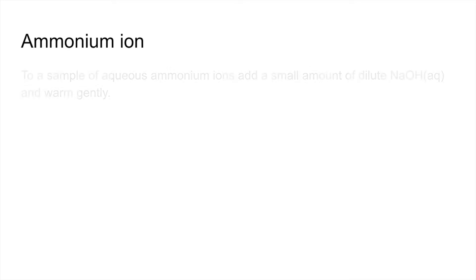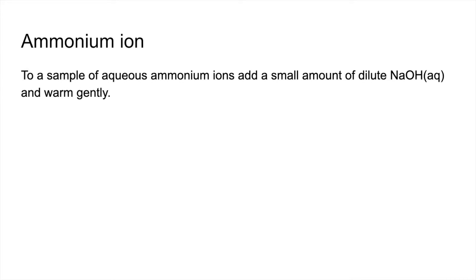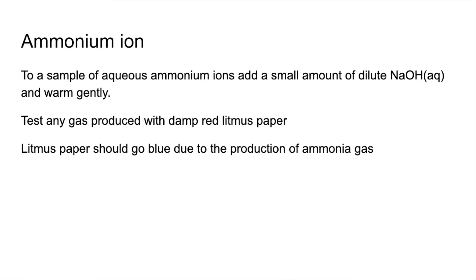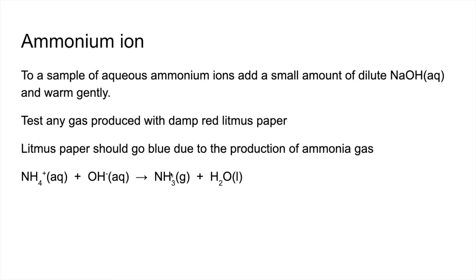Ammonium ions first. To your sample of aqueous ammonium ions, add a small amount of dilute aqueous sodium hydroxide and warm gently. Test any gas produced with damp red litmus paper — the litmus paper should turn blue due to the production of ammonia gas. The ionic equation confirms the ammonia gas causing the colour change.